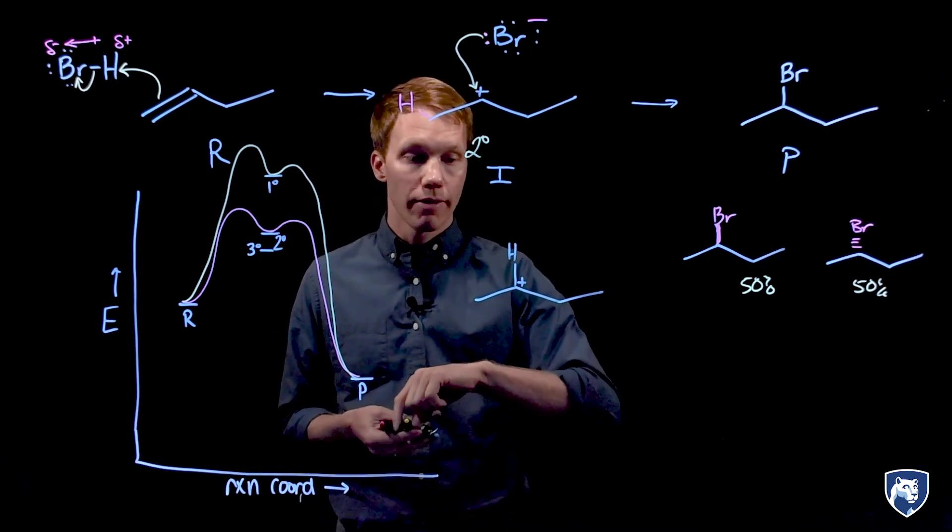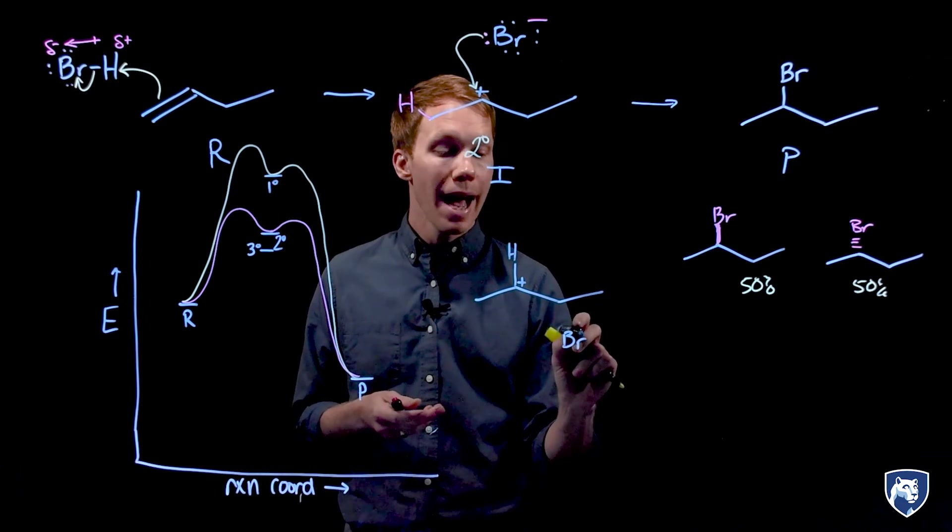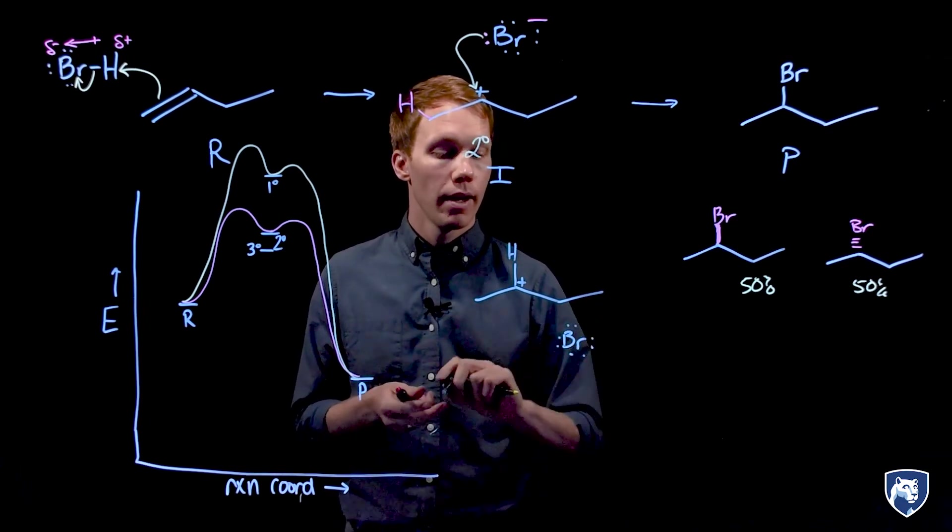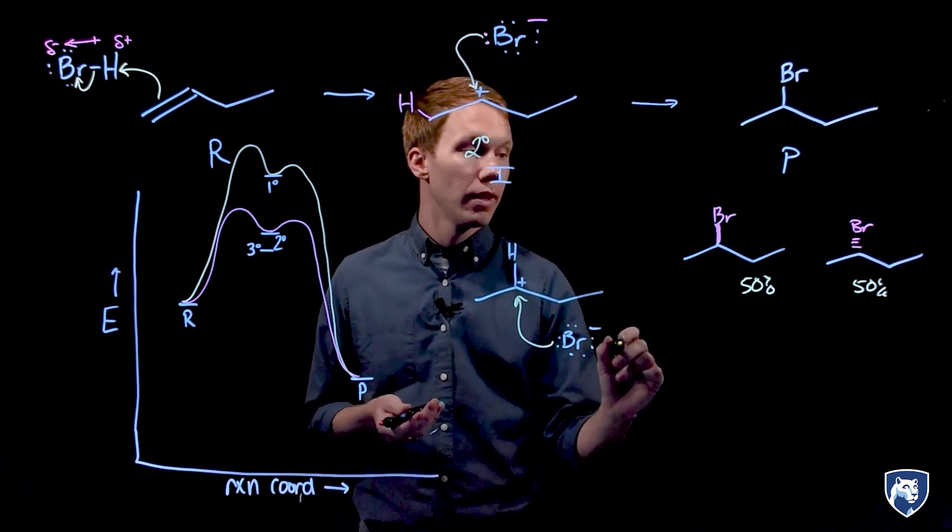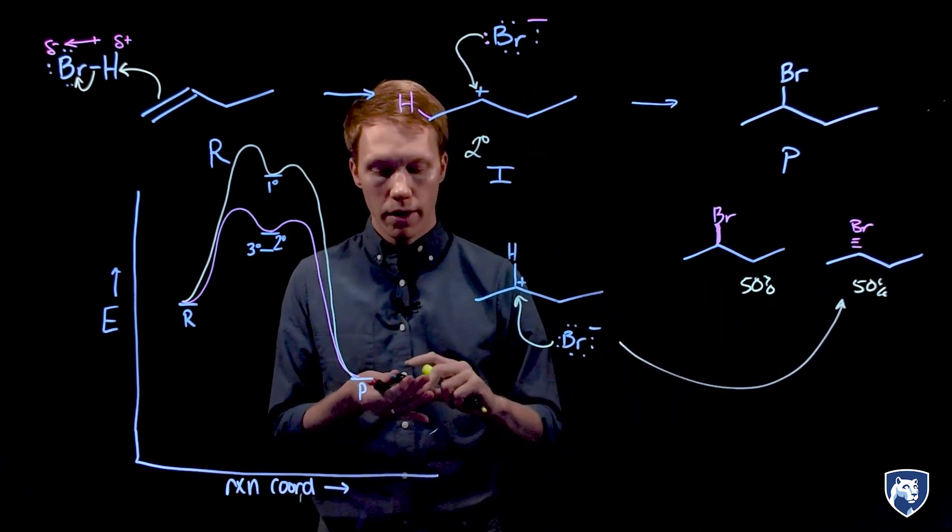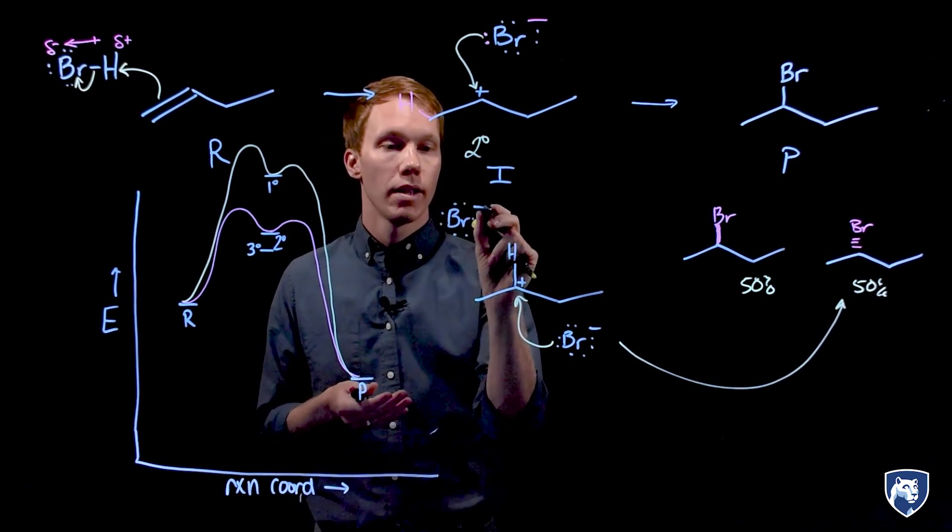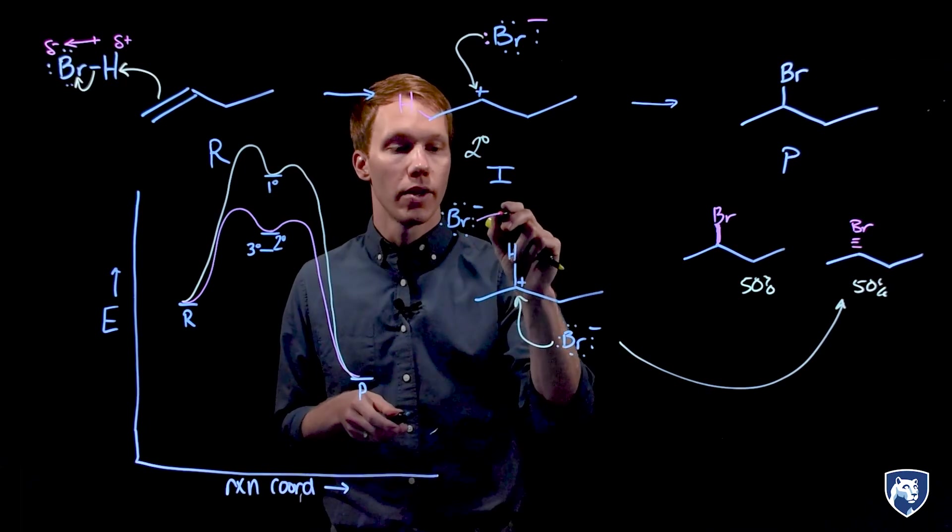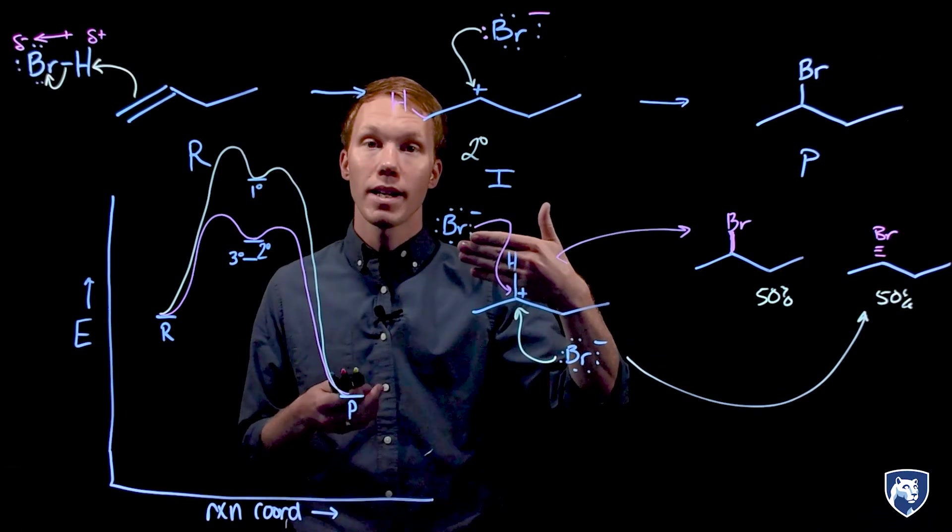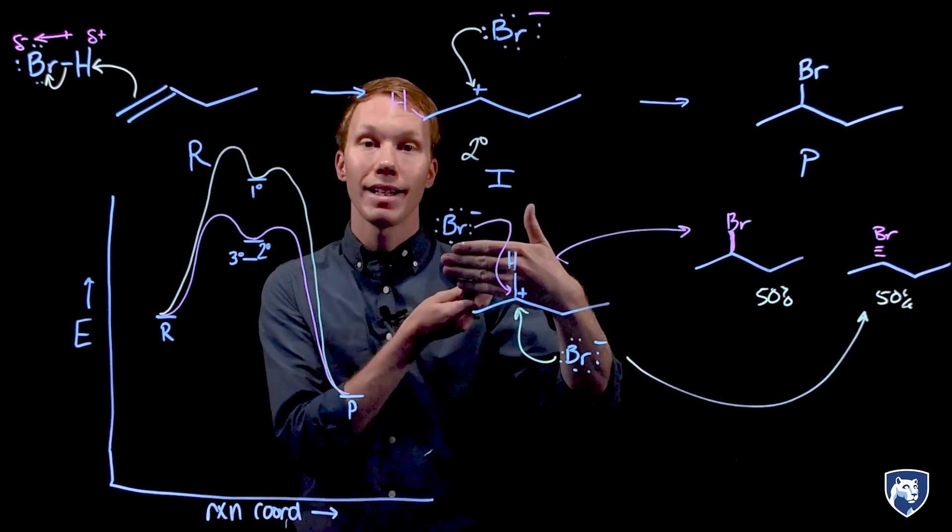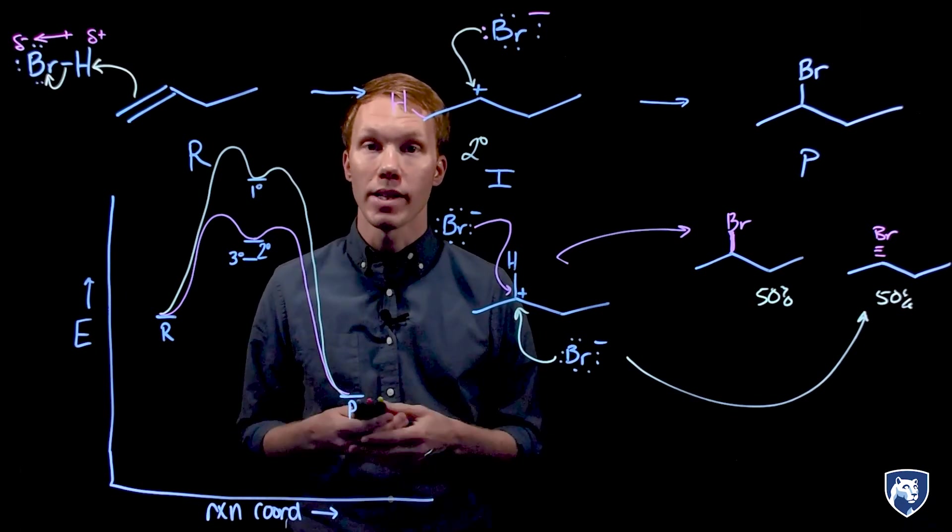This means that the nucleophile, the bromide ion, can attack from the back face from behind and give this product or the bromide ion could attack from the front face and give the other stereoisomer. Here. Because of that planarity, attack from the front or the back is equally probable and therefore we get a 50-50 mixture of the two stereoisomers.